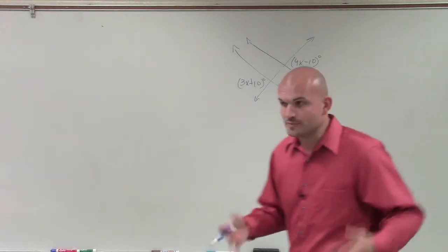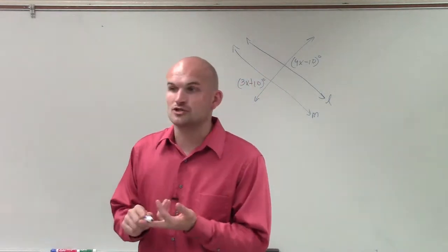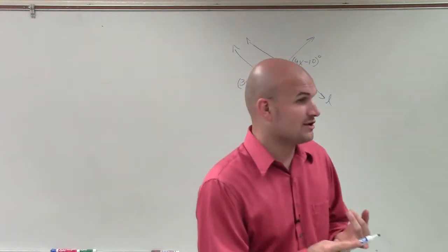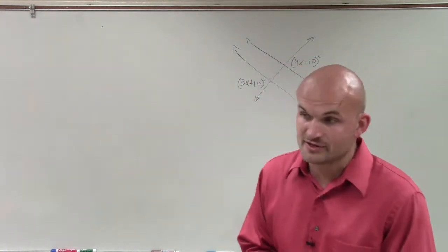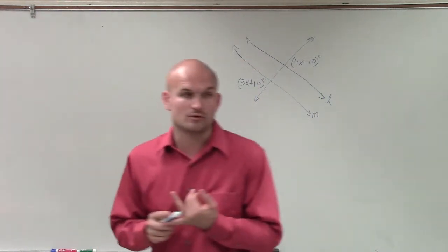Now remember, we can prove parallel lines if we have alternate interior angles that are equal in measure, if we have alternate exterior angles that are equal in measure, if we have consecutive interior angles where the sum of the two angles is equal to 180, or if we have corresponding angles that are equal in measure.